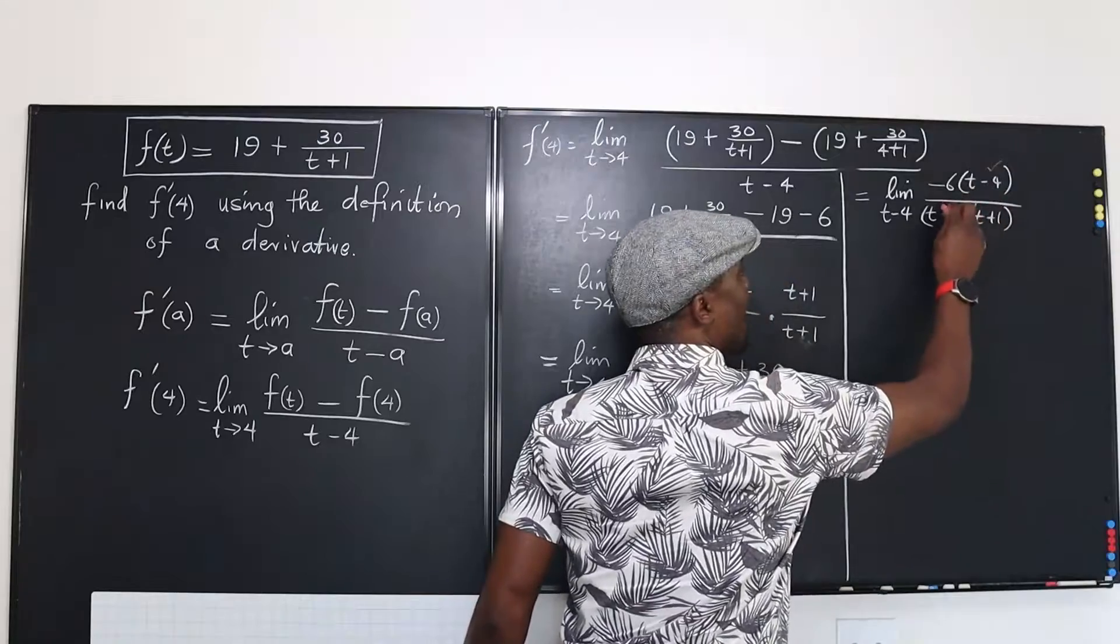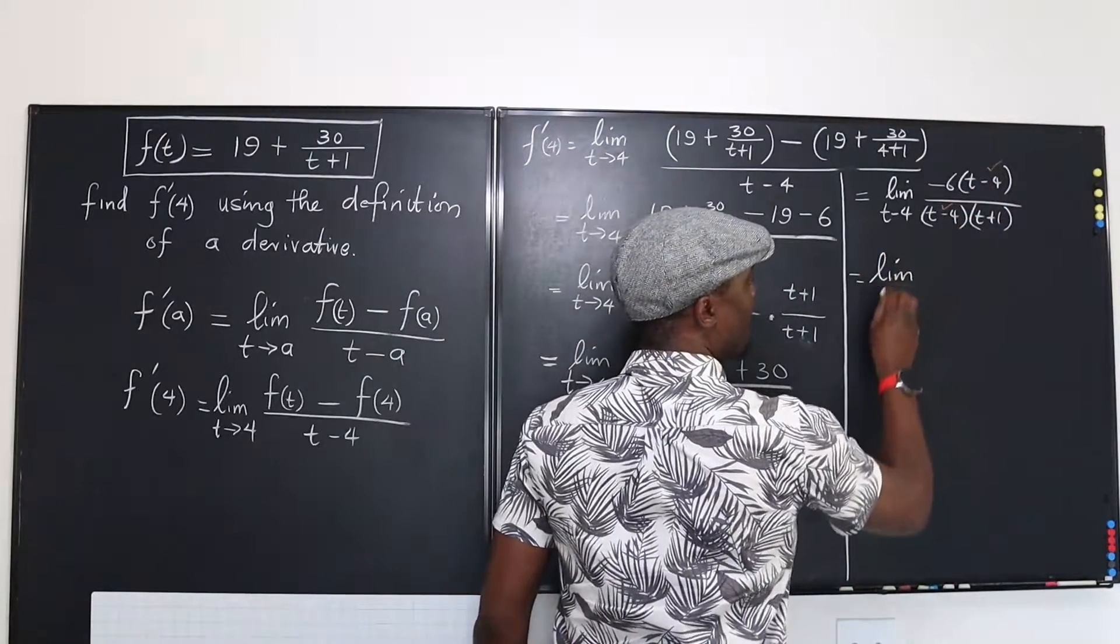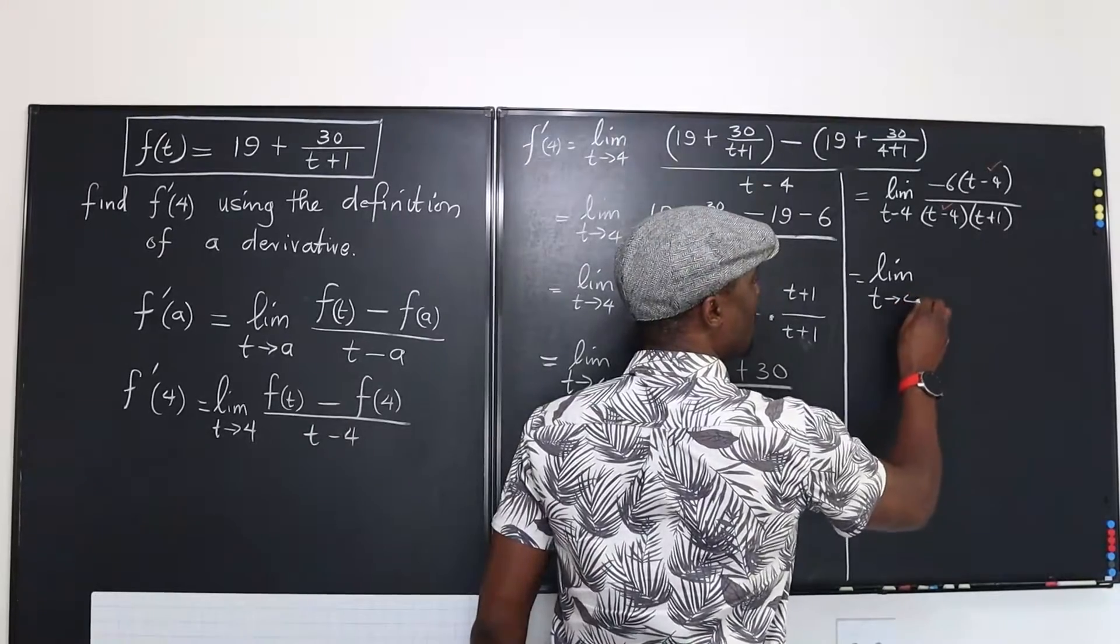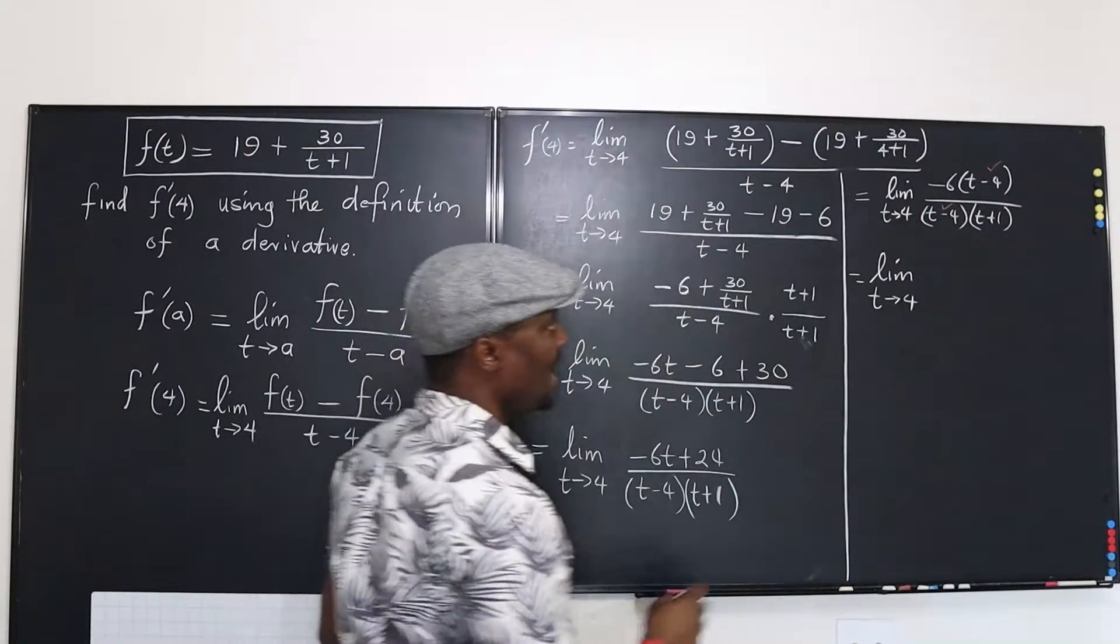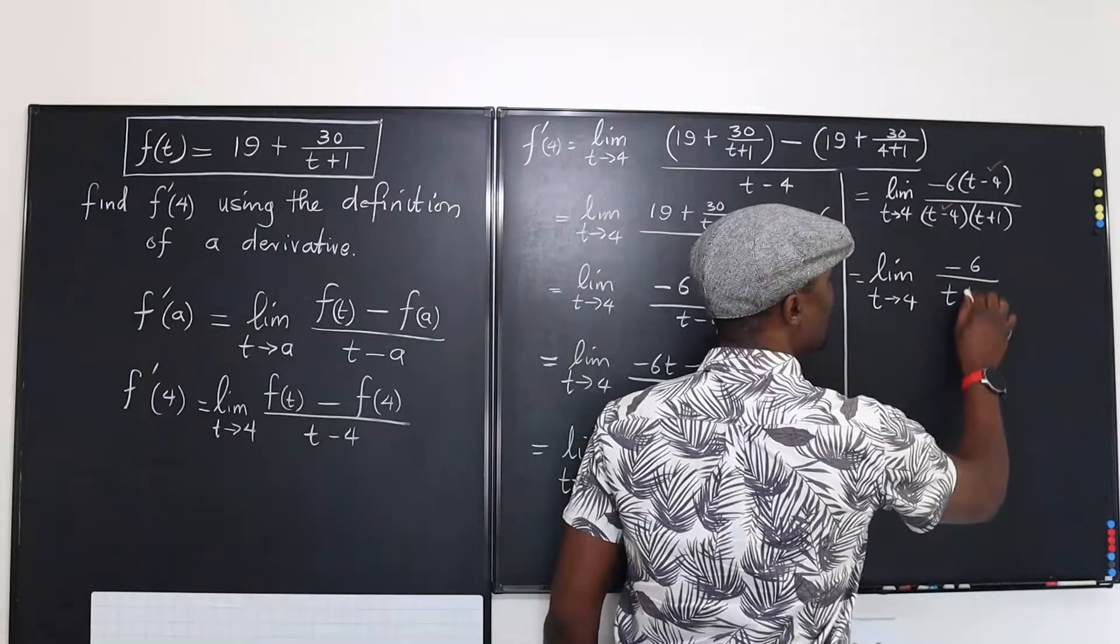This will take this out like that and what you have left will be the limit as t goes to 4 of negative 6 over t plus 1.